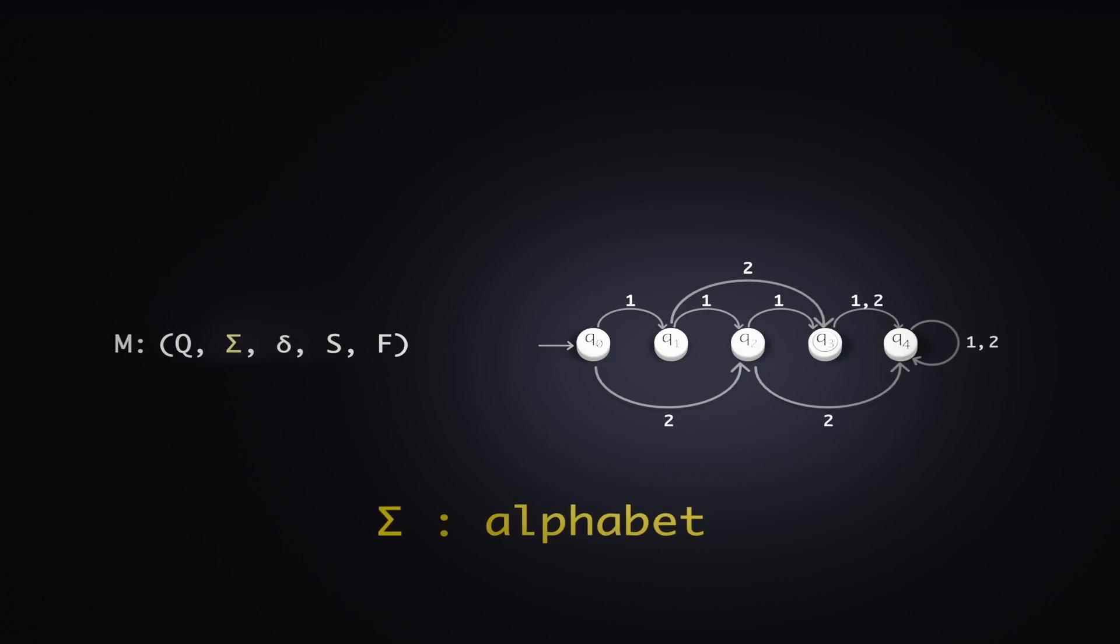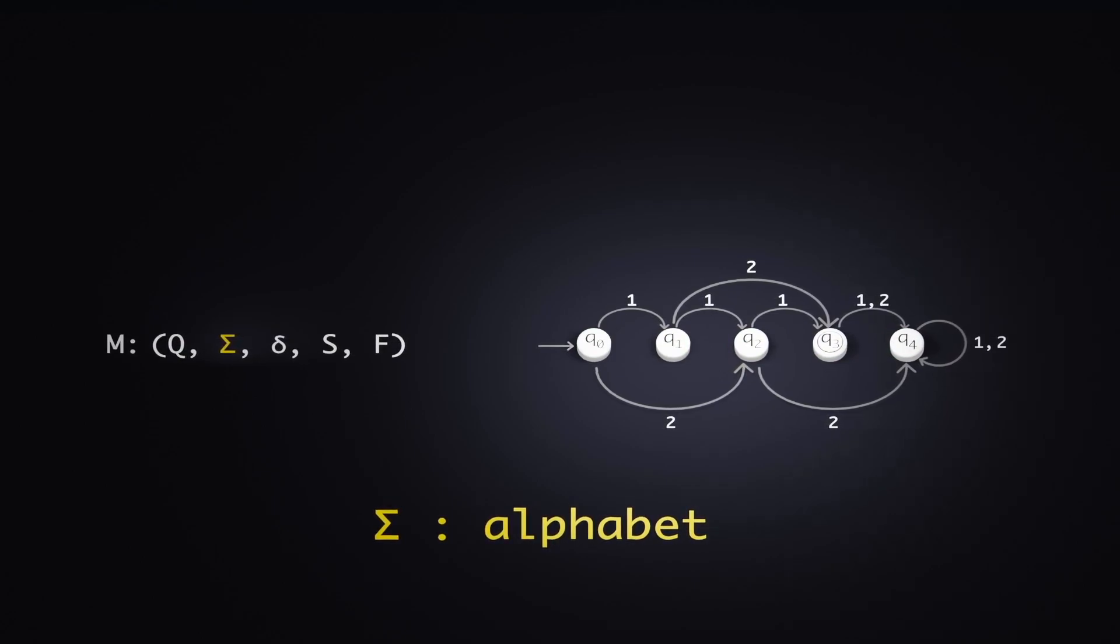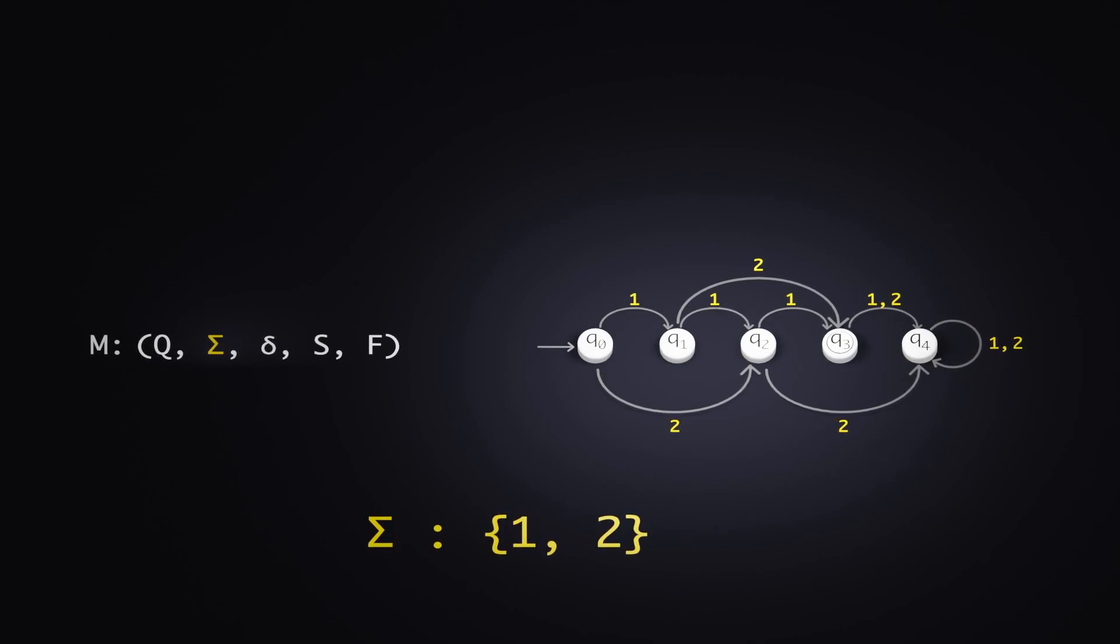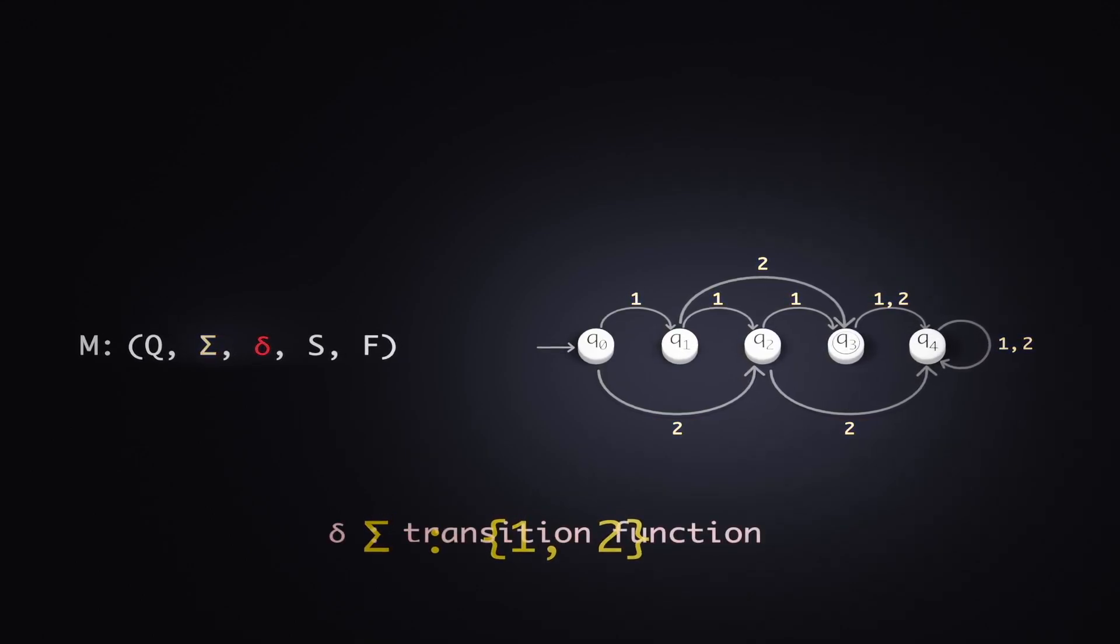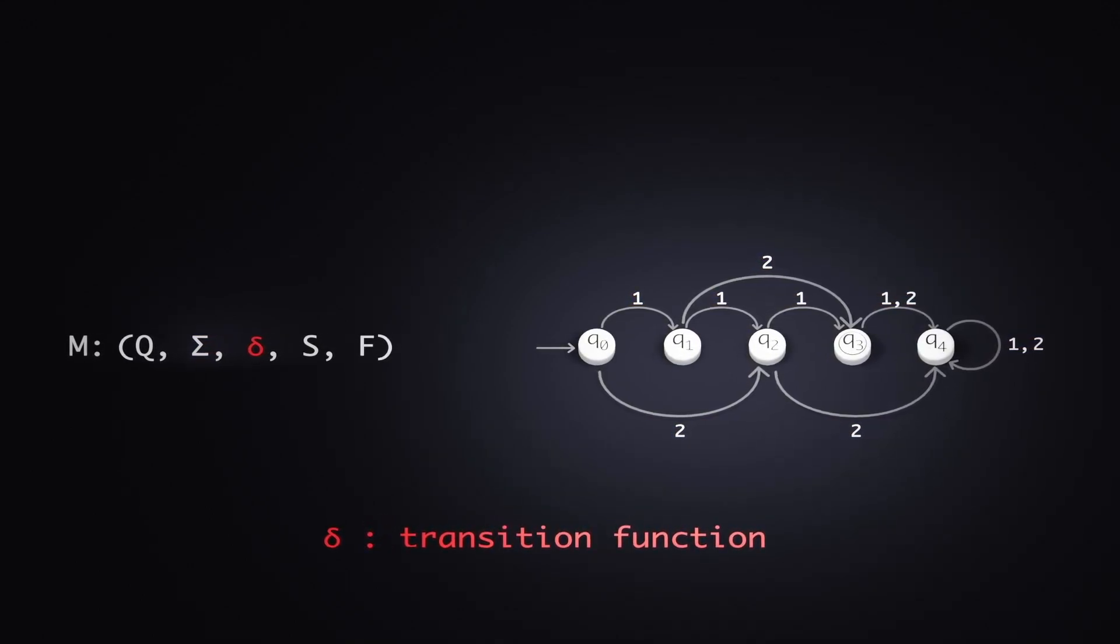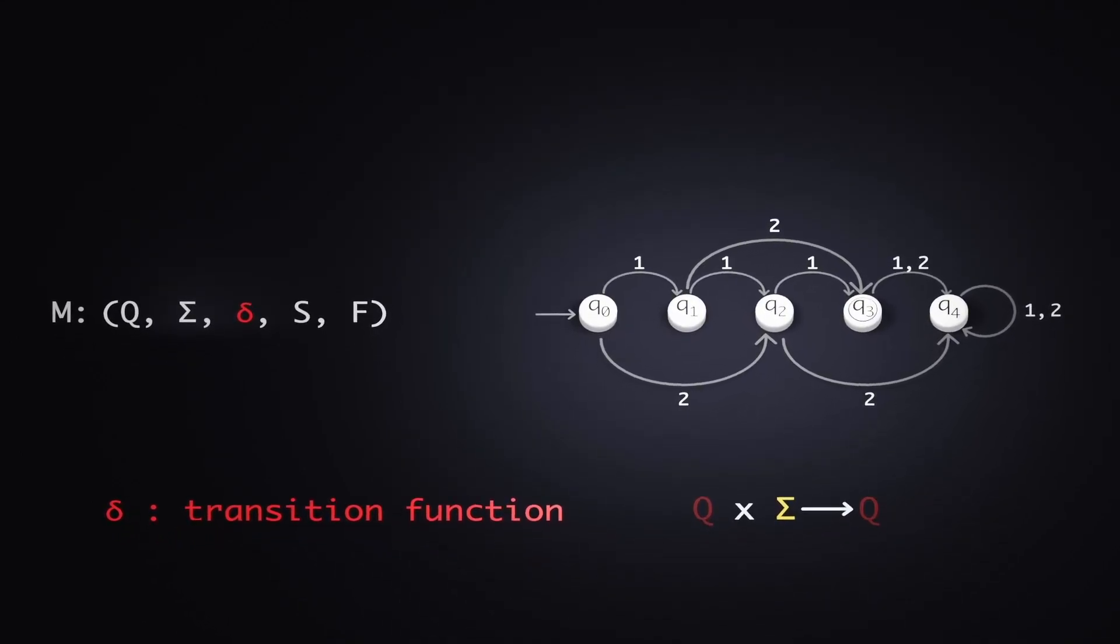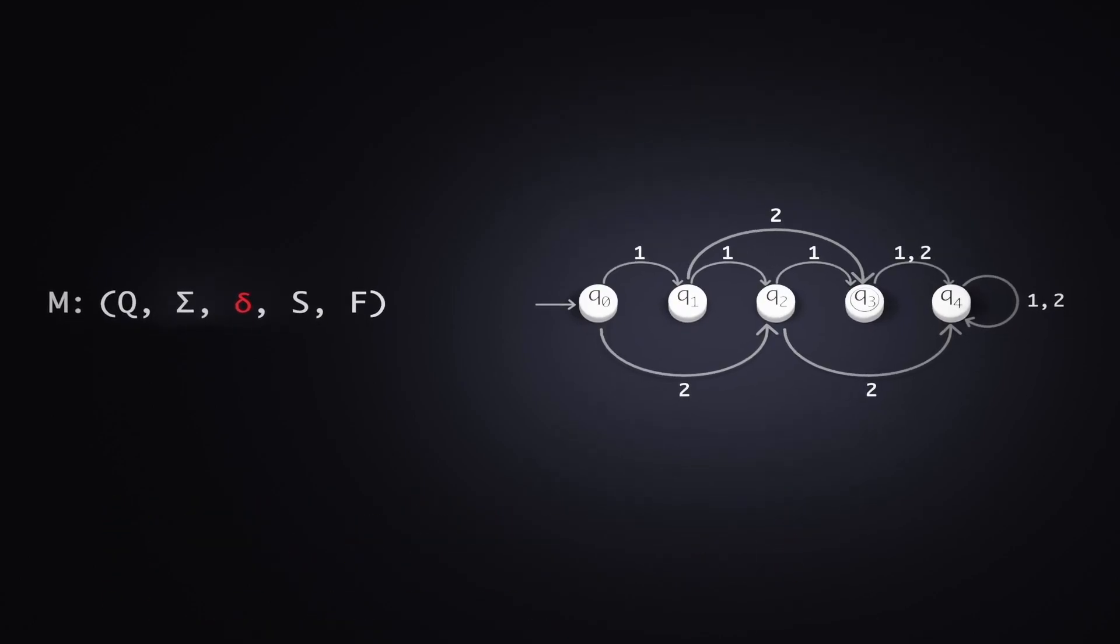The alphabet of input symbols are the type of notes the machine accepts, which we have simplified to be called 1 and 2. The transition function delta is slightly more involved. It explains what each state will transition to given the symbol it encounters.